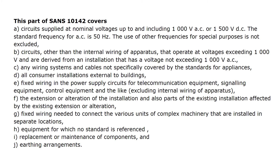Section 1.2: Aspects Covered by this part of SANS 10142. This part covers: A. Circuits supplied at nominal voltages up to and including 1000 V AC or 1500 V DC. The standard frequency for AC is 50 Hz. The use of other frequencies for special purposes is not excluded. B. Circuits other than the internal wiring of apparatus that operate at voltages exceeding 1000 V and are derived from an installation that has a voltage not exceeding 1000 V AC.